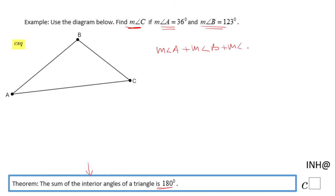That's what this theorem says. Now, the measure of angle A is given to us as 36°, measure of angle B is given as 123°, and you can keep this in this format—don't call it X, it's up to you—equals 180°.